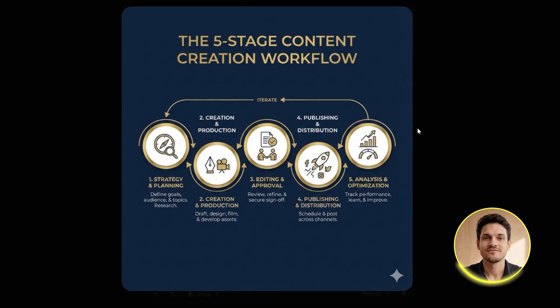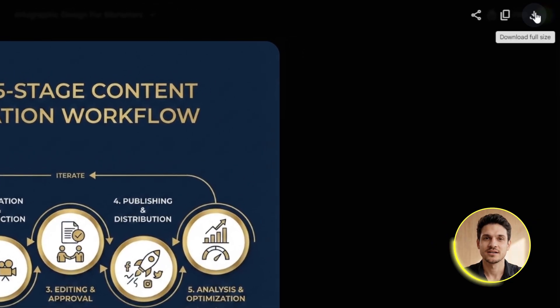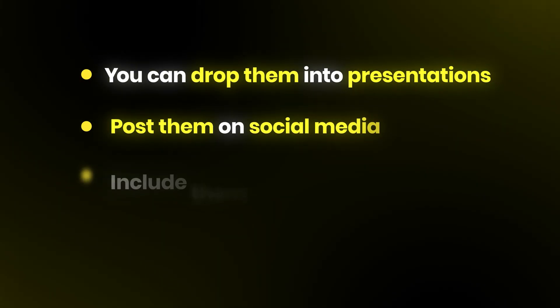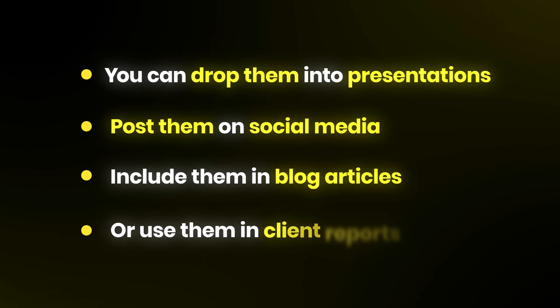Once you're happy with your infographic, downloading it is simple. Just click on the image and you'll see a download button appear in the corner. Click that and you'll get a high-resolution version saved directly to your device. These images are ready to use immediately — you can drop them into presentations, post them on social media, include them in blog articles, or use them in client reports. The quality is high enough for professional use, and because the text is so clean, they look polished and credible.